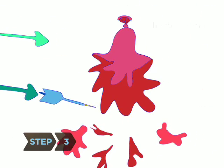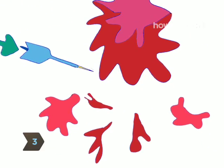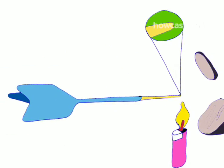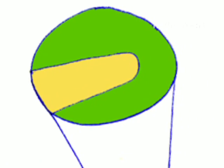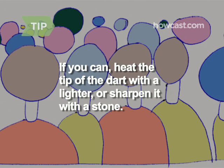Step 3. Pop the balloon with a dart by arcing it rather than rifling it. But even this might not work, because those balloons are underinflated and the dart tips are hopelessly dull. If the carnival is crowded and the carny is distracted, heat the tip of the dart with a lighter, or quickly sharpen it with a stone.